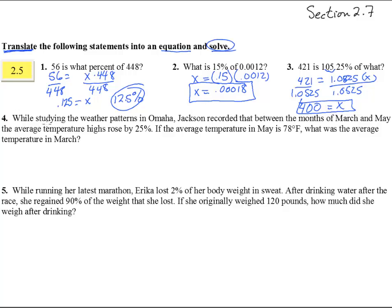Number four, while studying the weather patterns in Omaha, Jackson recorded that between the months of March and May, the average temperature highs rose by 25 percent. So we've got March to May, it rose, that's going to be a plus sign right there, by 25 percent.